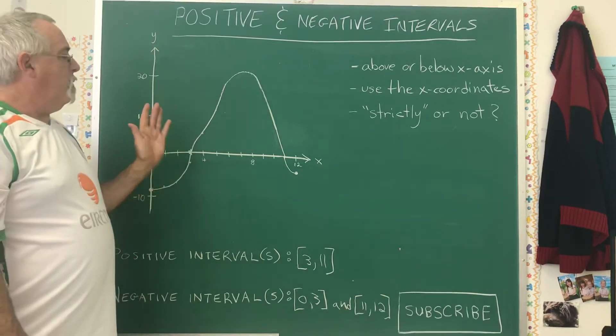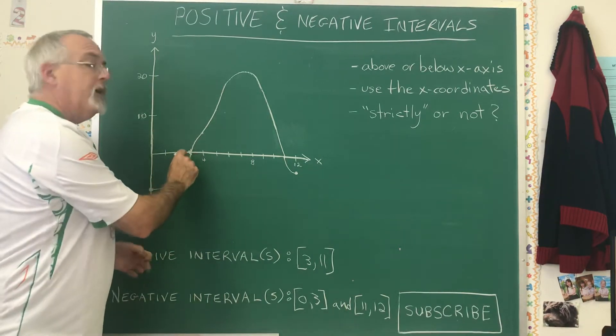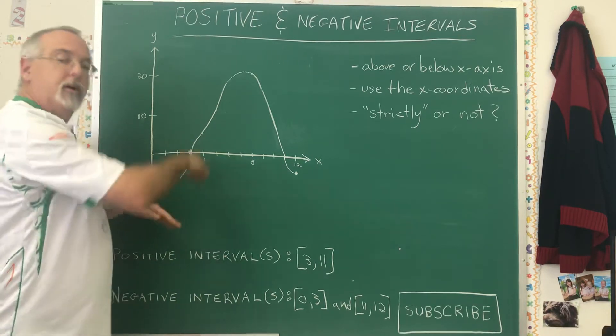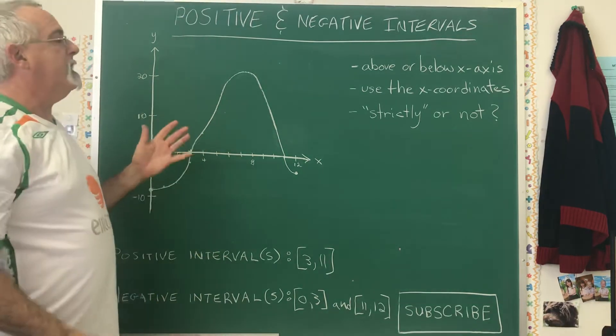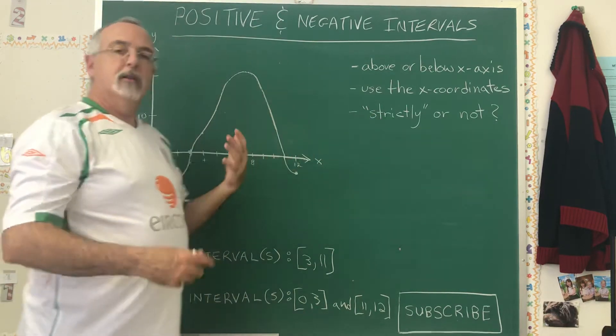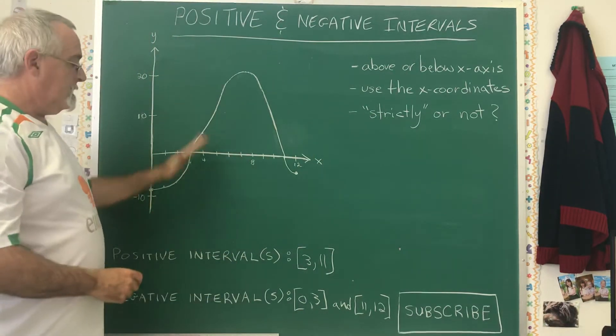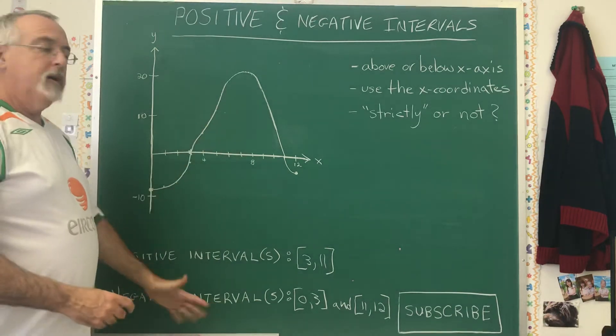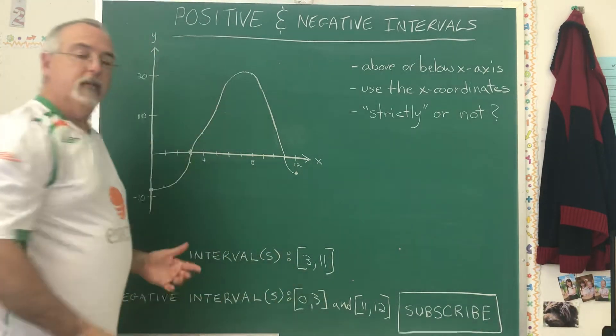In math, if we want you to say only the points that are positive and not include the zero, we have to ask for the strictly positive interval or the strictly negative interval. Since the word strictly was not in here, we include the three in both intervals.